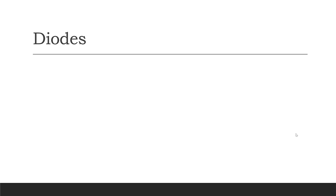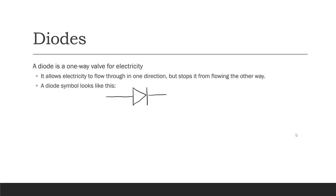First of all, we're going to talk about diodes. A diode is a one-way valve for electricity. It allows the electricity to flow through one way, but it stops it from flowing the opposite direction. A diode symbol looks like this.